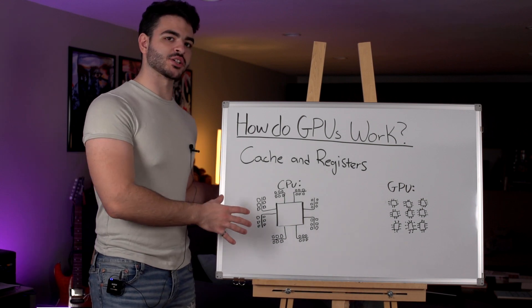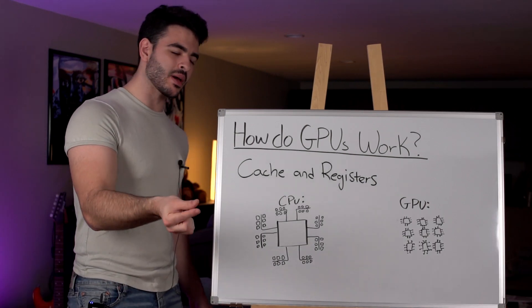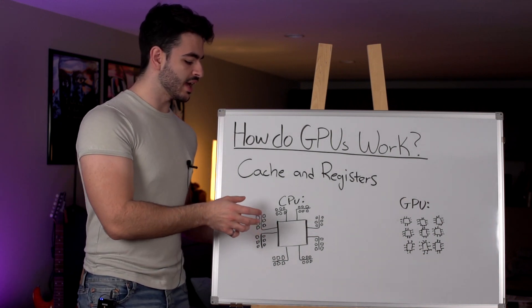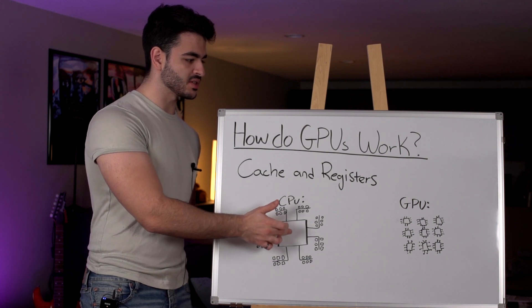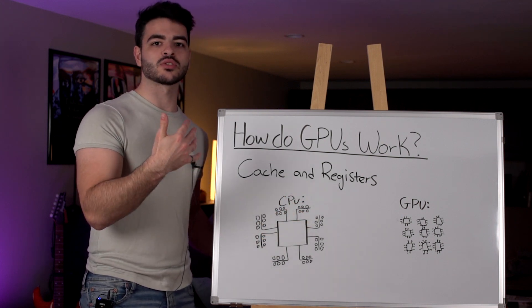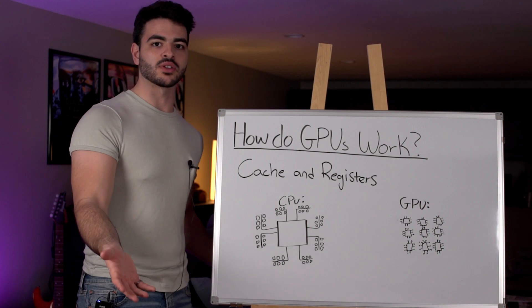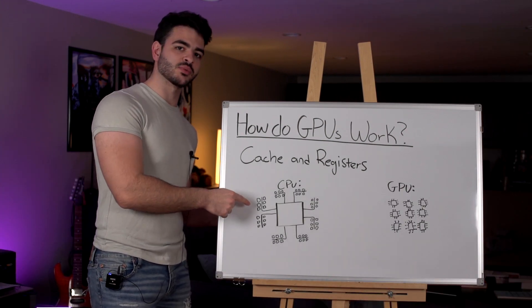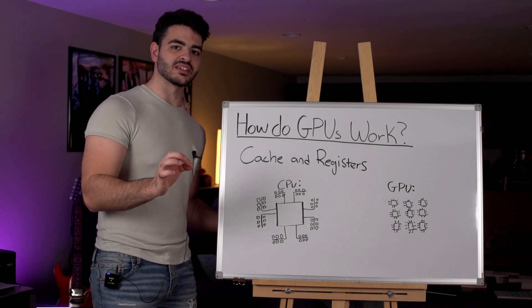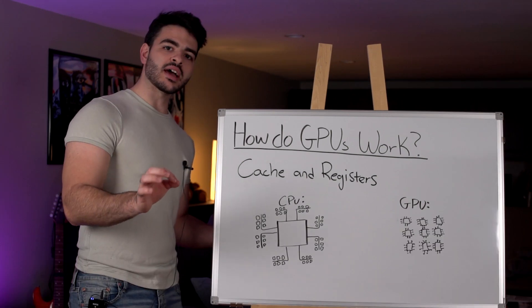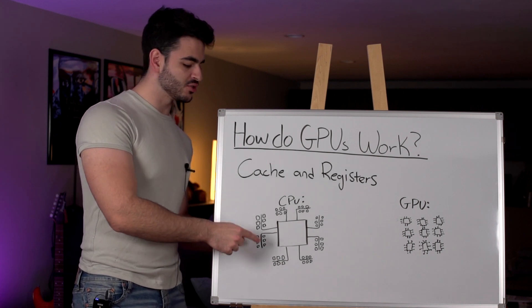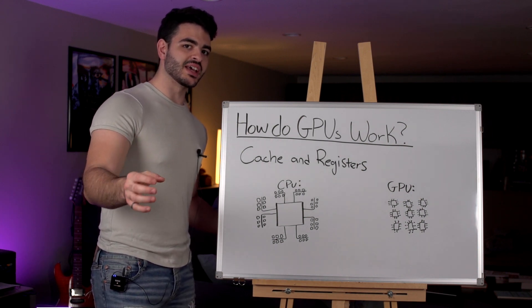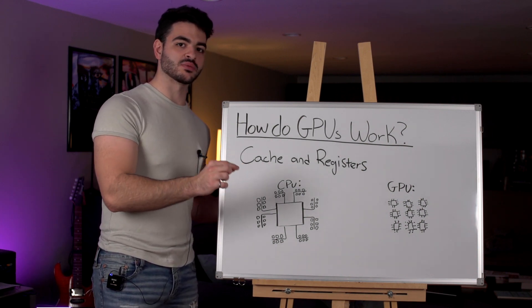The next thing we have to look at is cache and registers. Cache and registers are like little memory chips that hold all of the data you've already fetched with that large transport truck, and then give access to the processing units to run whatever convolutions or matrix multiplications they have to do. When doing computations at this scale and speed, even the distance between the cache and registers and the processing unit adds latency to each operation. The shorter that distance, the better. Also, the size of cache and registers matters a lot.